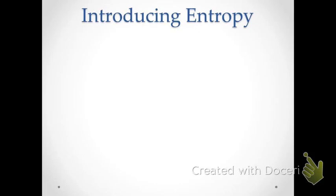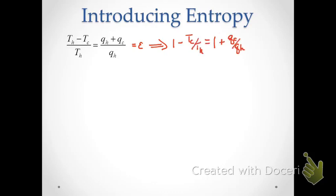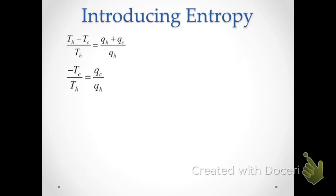You're asking: what does this have to do with entropy? It was the work on the Carnot cycle — developed by Carnot to explore the properties of steam engines — that led to the concept of entropy. When we compare our two efficiency expressions, T_H minus T_C over T_H equals Q_H plus Q_C over Q_H, and algebraic manipulation gives us a relationship between the temperature ratio and the heat ratio.